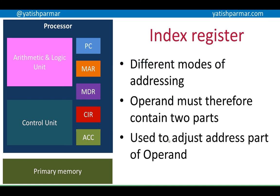Then we've got the index register — that's not on my diagram, as I've used the same diagram from my previous Von Neumann architecture video. The index register is to do with different modes of addressing. When you have different addressing modes, the operand must be in two parts: the mode used and the actual address itself. The mode explains how the address should be interpreted, and the index register is used to adjust the address part of the operand. The next video will talk about these addressing modes and explain how the index register is used.